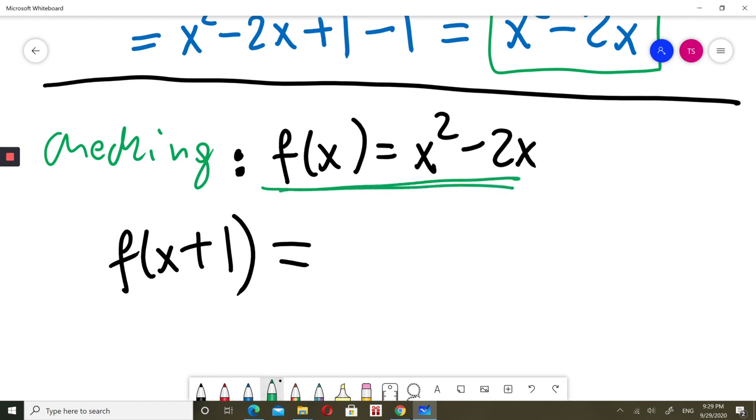I'm going to use this one. My x now is just x plus 1. So f of x equals x squared minus 2x. So when my x is x plus 1, it will be just x plus 1 squared minus 2 of my x. My x is x plus 1.